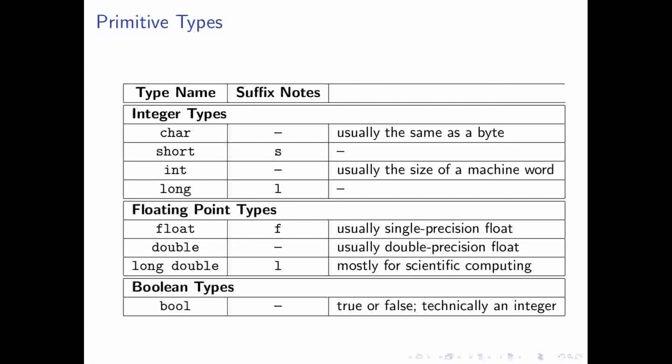So, just some special notes about this. We, for instance, we have char as most likely being the same as a byte, and usually being the minimum unit of data that you can have.